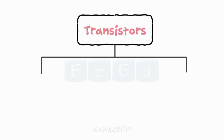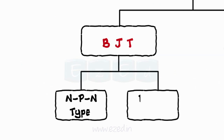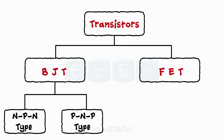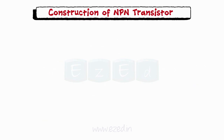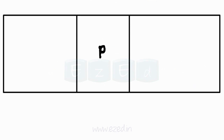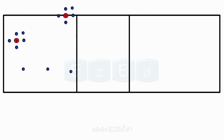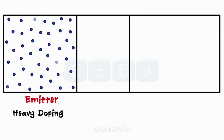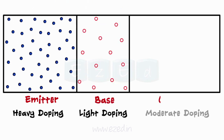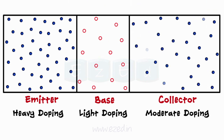BJTs are classified into two types: NPN transistor and PNP transistor. When we sandwich a P-type semiconductor between two N-type semiconductors, we get an NPN structure. Out of the three regions, the emitter is heavily doped with N-type impurities. The base is very lightly doped with P-type, and the doping concentration of N-type impurities in the collector lies between base and emitter. Hence, the emitter and collector contain free electrons whereas the base region contains free holes as majority charge carriers.